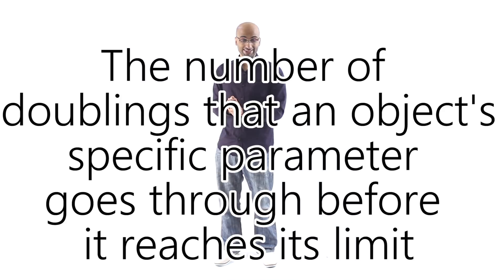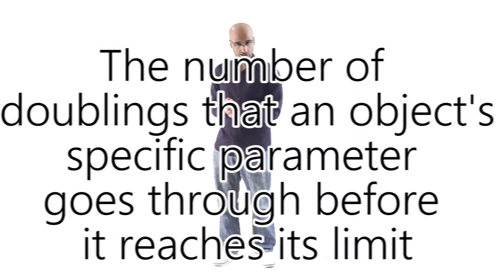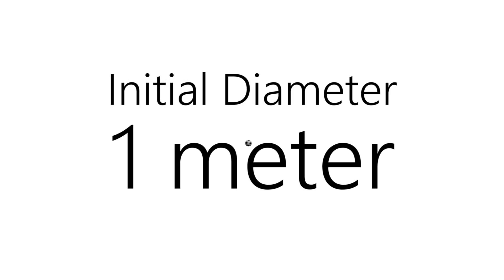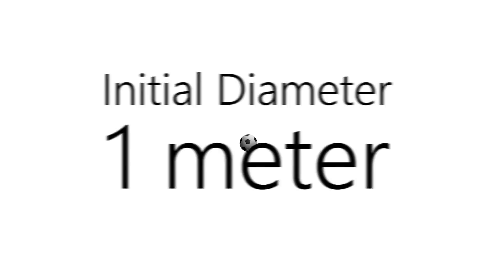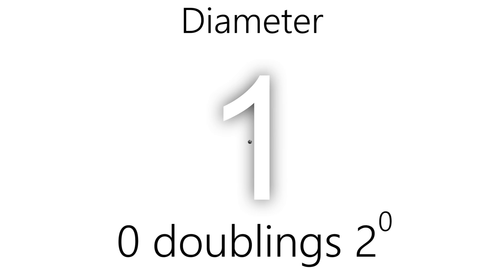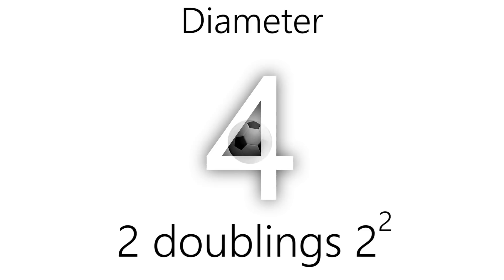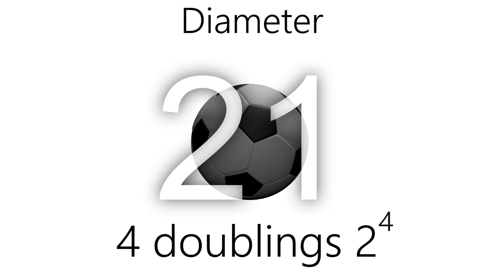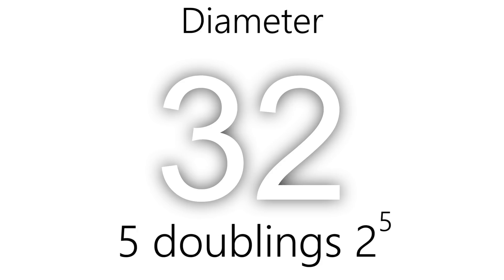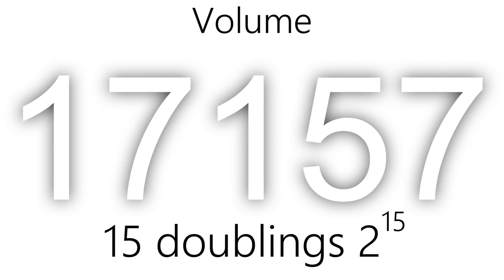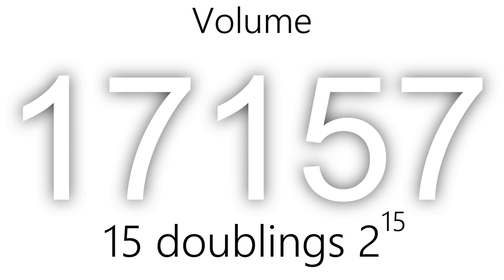What is the number of doublings that an object's parameter goes through before it reaches its limit? To explain what that means, let's go back to that ball. Let's say the limit for growth of the ball is when the diameter reaches 32 meters. In reality, when anything approaches its growth limit there is usually a slowdown, but let's imagine it's a sudden burst for simplicity. The number of doublings for the diameter of the ball before it reaches its limit is 5 doublings. But if we take volume into account, it's 15 doublings. So we should take the highest value — the one that gives us the highest number of doublings.